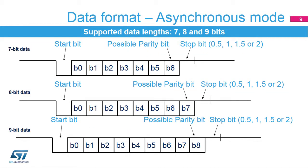The frame format used in asynchronous mode consists of a set of data bits in addition to bits for synchronization and optionally a parity bit for error checking. The USART supports 7-, 8-, or 9-bit data lengths. A frame starts with 1 start bit, where the line is driven low for 1 bit period, used for synchronization. The start bit is followed by 7, 8, or 9 data bits. If parity control is enabled, the parity bit is transmitted as the last data bit. Finally, a number of stop bits — 0, 1, 1.5, or 2 — where the line is driven high, end the frame.